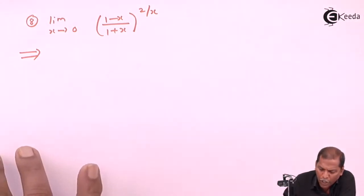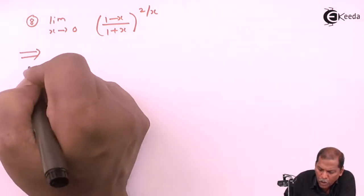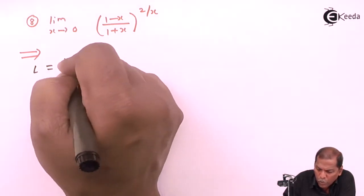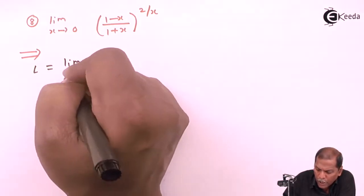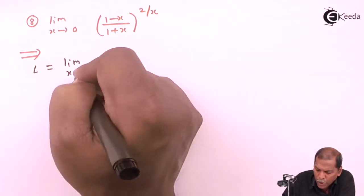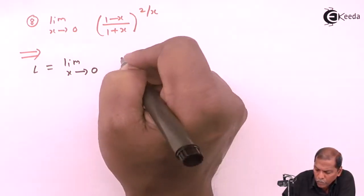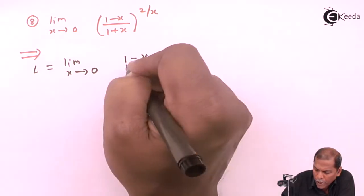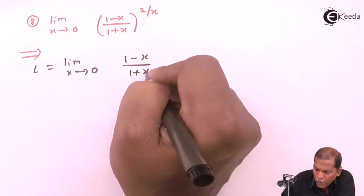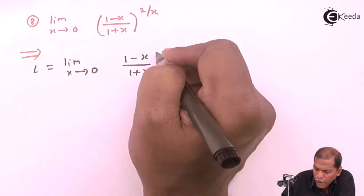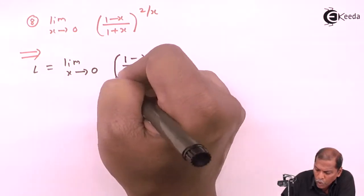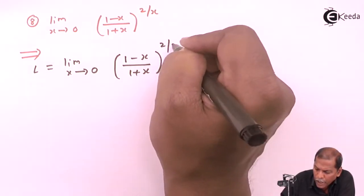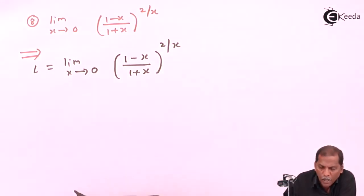Now let's see the solution. First of all, l is equal to limit x tends to 0, of 1 minus x upon 1 plus x, whole bracket raised 2 by x.